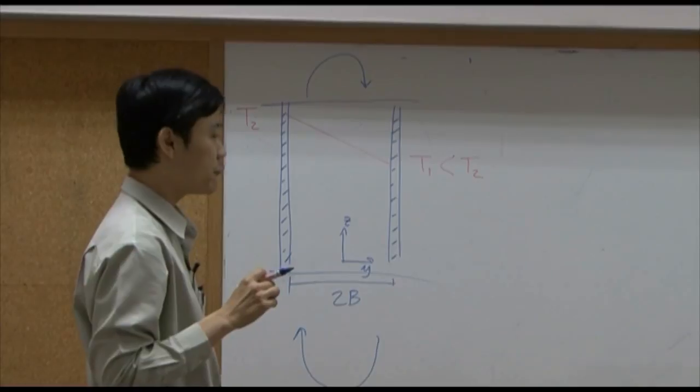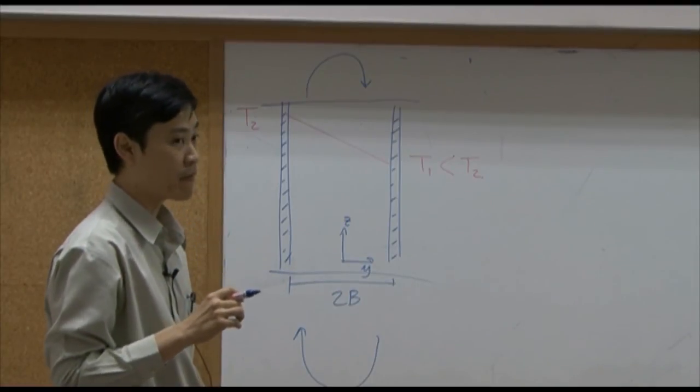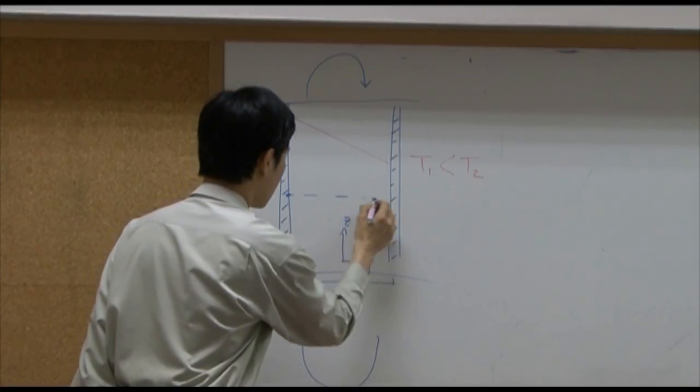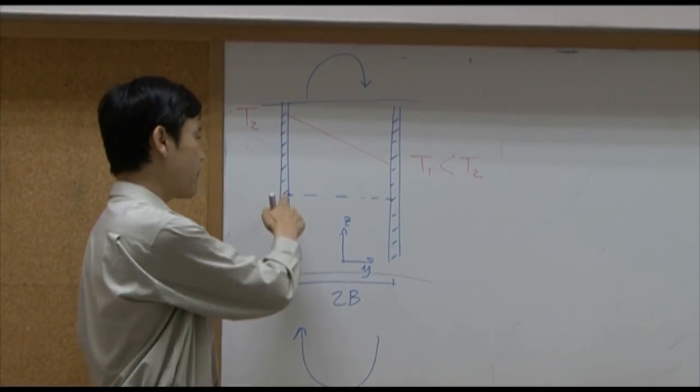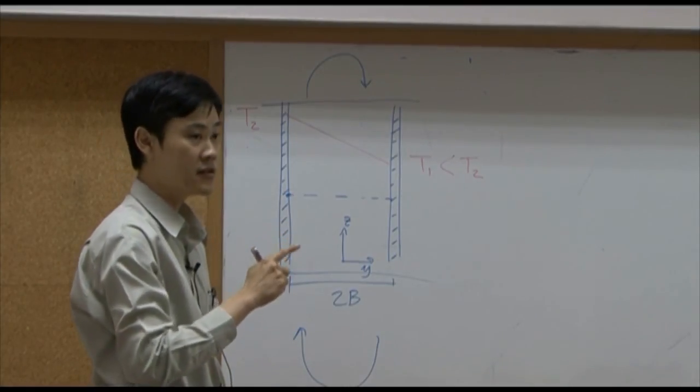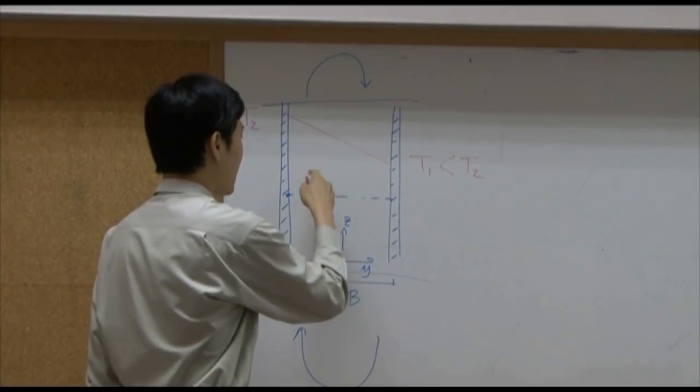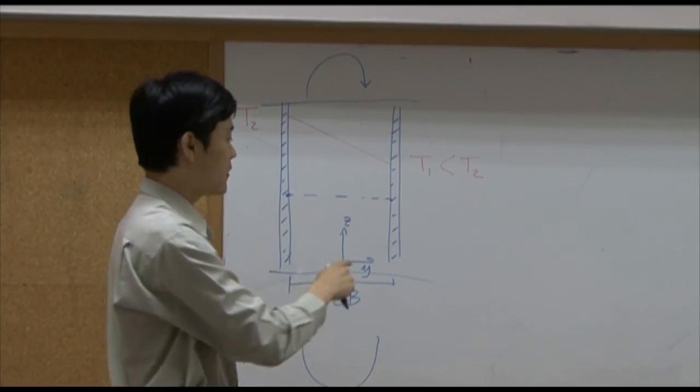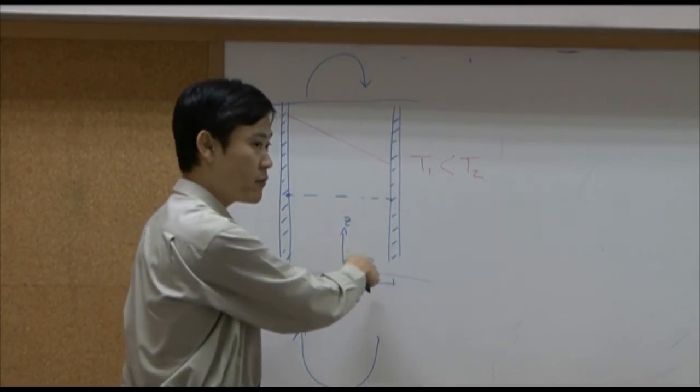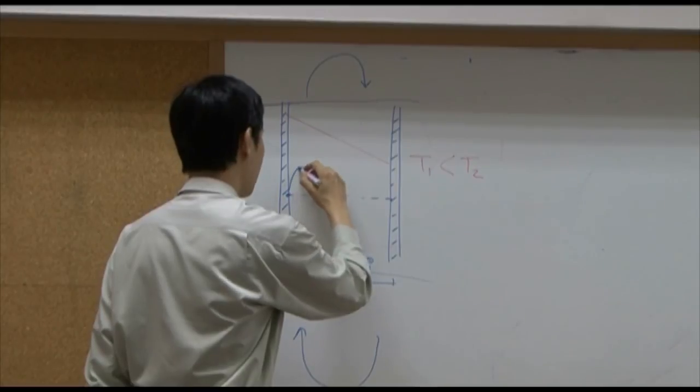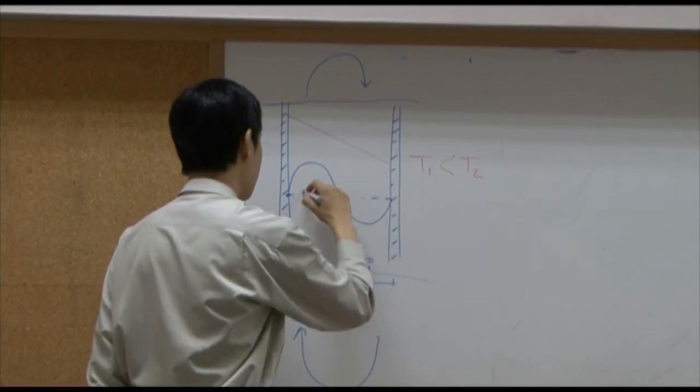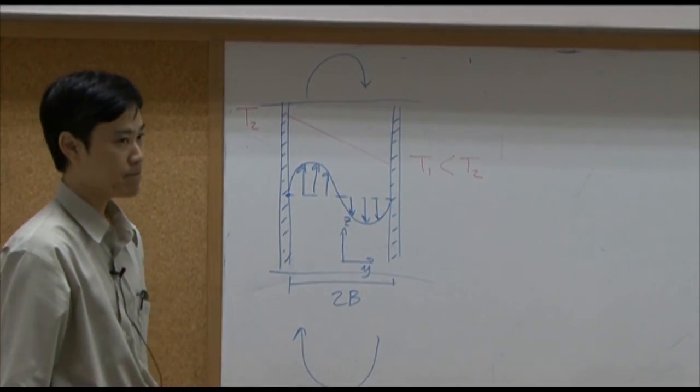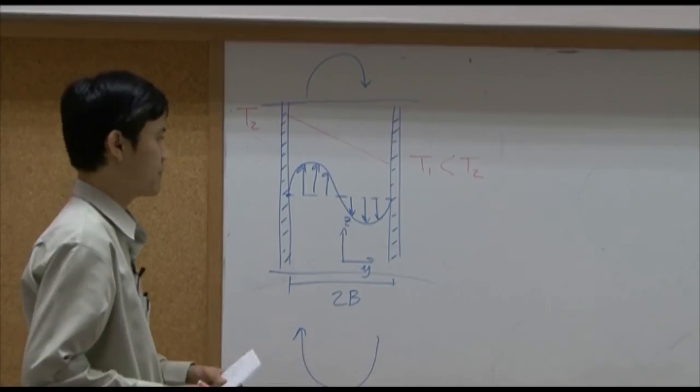So if you're trying to imagine velocity profile, the velocity profile at this point, velocity of fluid at the wall is supposed to be zero. Around this region, fluid is supposed to move upward. Around this region, fluid moves downward. So velocity profile is supposed to look something like this.